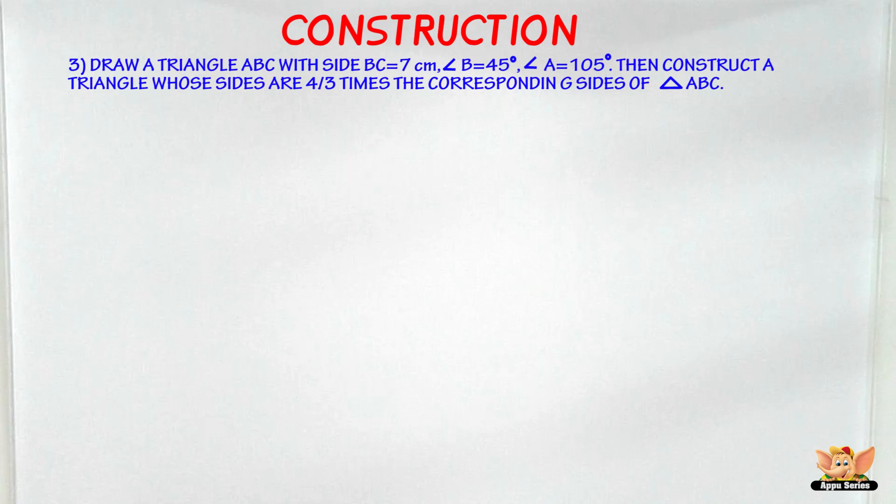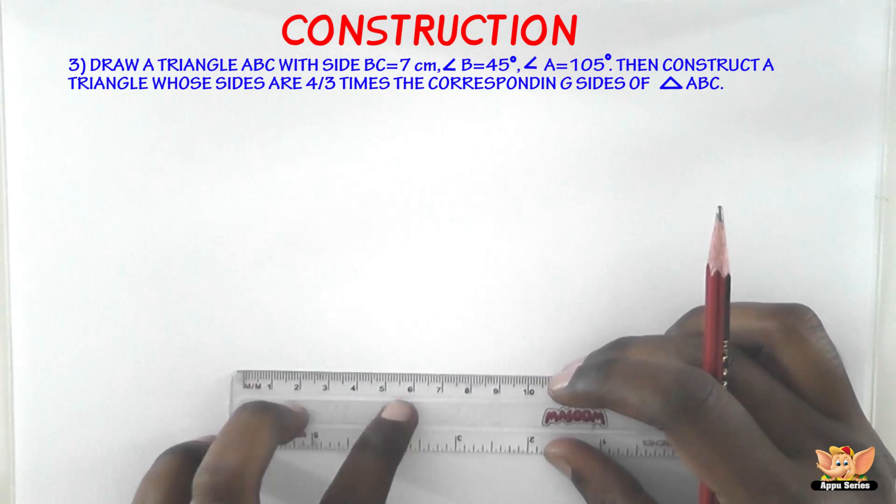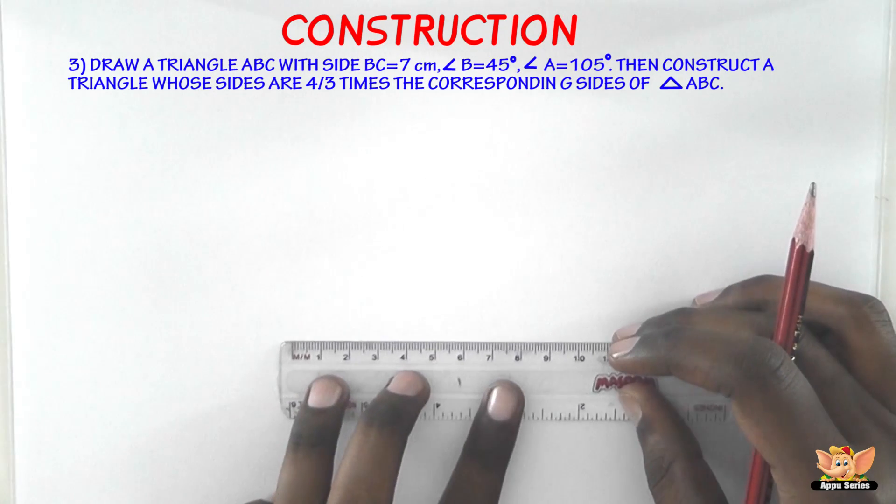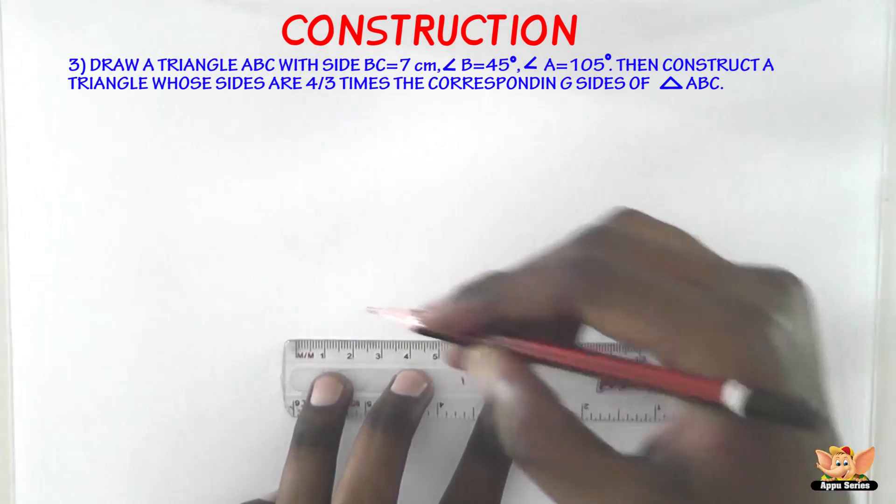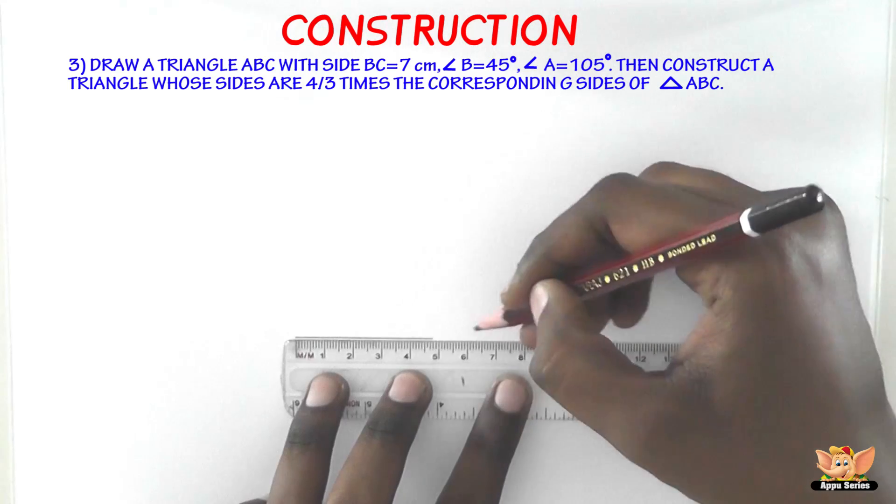So now first of all, let us draw the triangle they've told. The triangle ABC with side BC equals 7 cm, angle B equals 45 degrees, angle A equals 105 degrees. So the first step here is draw BC equal to 7 cm.